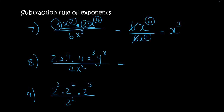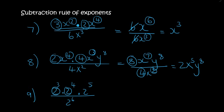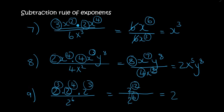For number 8, first do the top: the 2 and the 4 do not have exponents so that becomes 8. The x's add to give x⁷, and the y stays as y⁸. At the bottom we have 4x². The 8 and the 4 don't have exponents, so 8 divided by 4 is 2. For the x's, subtract the exponents to get x⁵, and the y has nothing to go with so it stays as y⁸. For the last one, do these 2's have exponents? Yes they do, so you cannot say 4. At the top, add the exponents to get 2¹², and at the bottom you have 2⁶. The 2's still have exponents so you can't divide normally — instead leave it as a 2 and subtract: 12 minus 6 gives 2⁶.